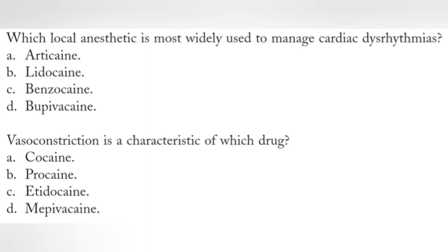Vasoconstriction is a characteristic of which drug? Options: cocaine, procaine, etidocaine, or mepivacaine? We know all local anesthetics are vasodilators, but one exception is cocaine. So vasoconstriction is a characteristic of cocaine. Key points: lidocaine is used to manage cardiac dysrhythmias, and cocaine is a vasoconstrictor.